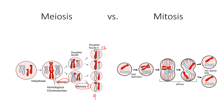Notice with mitosis over here on the right-hand side, these homologous chromosomes are not pairing up. In fact, all 46 chromosomes separate from a double-stranded state into a single-stranded state. We end up with 46 total chromosomes in each one of these cells, and we only create two cells as a result of mitosis.